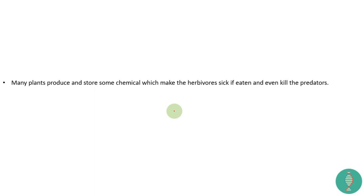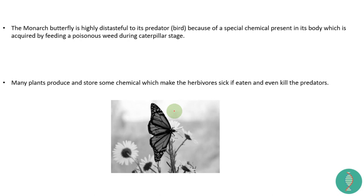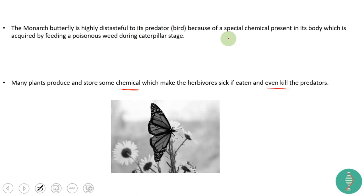Many plants produce and store chemicals which make herbivores sick, and if eaten, can even kill the predator. The monarch butterfly is highly distasteful to its predators because of a special chemical present in its body, which is acquired by feeding on a poisonous weed during its caterpillar stage.